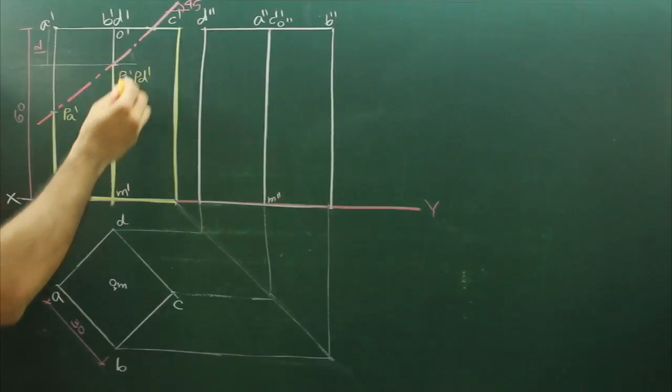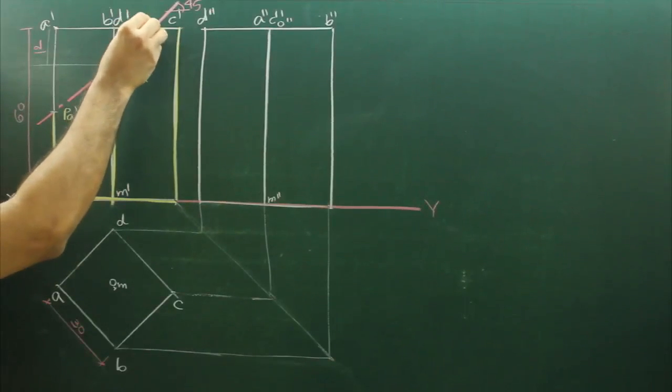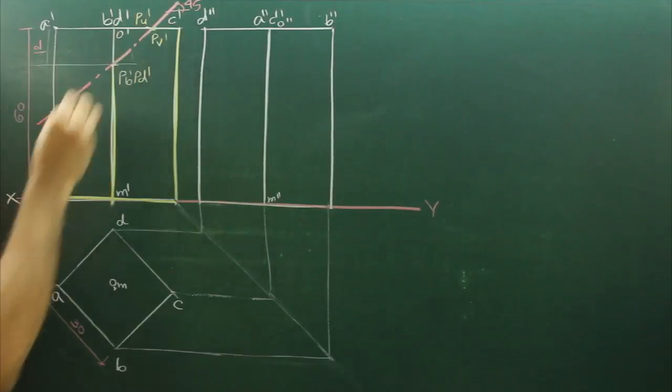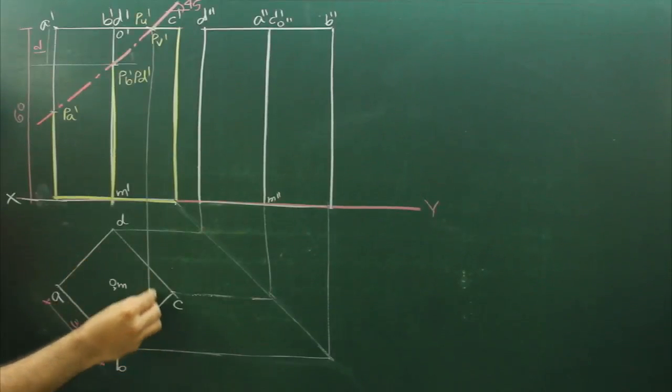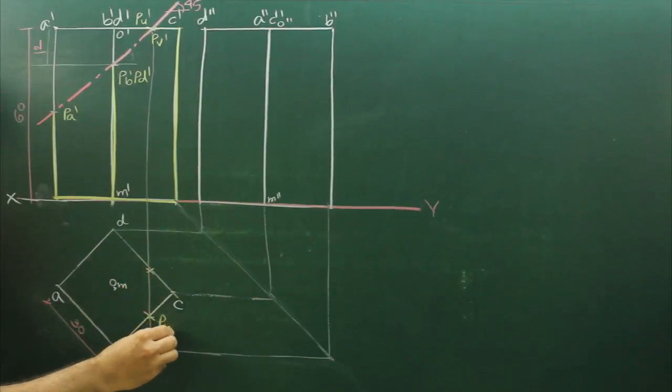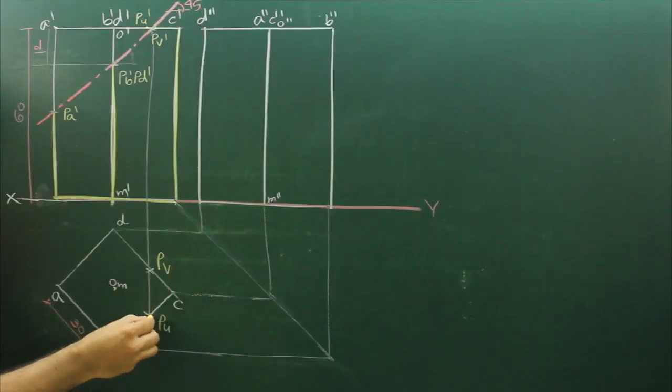Now whenever you cut the top surface, you get two points, that is PU dash and PV dash. We will project this point down, wherever it will cut in top view, that is PU and PV.